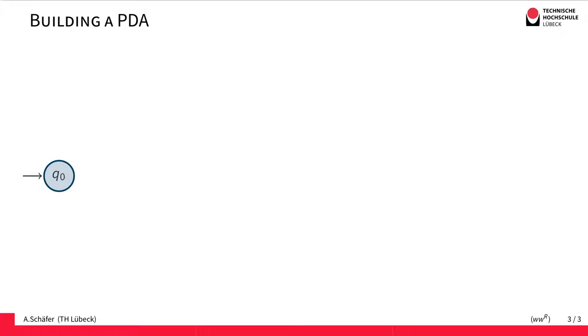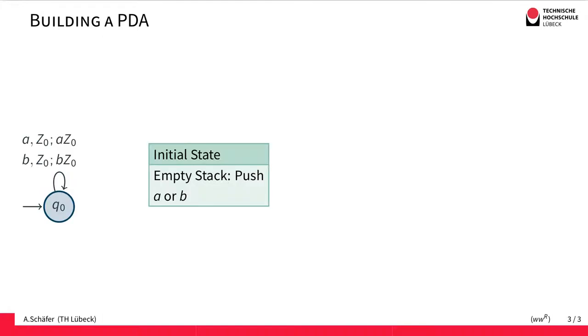And now we turn this idea into a PDA. When building a PDA, the first thing to do is we take an initial state. It's called Q0. Then we have to consider what we would like to do. We would like to push the input on the stack. Initially, the stack is more or less empty apart from this Z0 bottom marker. So if we read an A and the stack is empty apart from the bottom marker, we put the A on the stack.